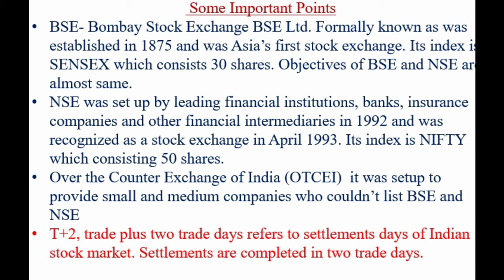Some important points about the secondary market: BSE, or Bombay Stock Exchange, is the first stock exchange in Asia, established in 1875. Its index is called Sensex and it consists of 30 shares. NSE, or National Stock Exchange, was established in 1992 and recognized in 1993, and its index is called Nifty, consisting of 50 shares. OTCEI — Over the Counter Exchange of India — is an arrangement for small and medium companies that couldn't fulfill the listing requirements of BSE and NSE. T+2 means trade plus two trade days, which is the settlement cycle in the Indian stock market.